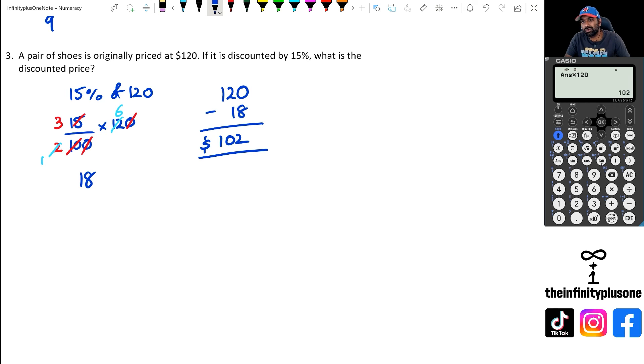So again, you can actually do this in the calculator. So you could have actually done 15% of 120 in the calculator. So you would just go 15 over 100 multiplied by 120, and that's going to give you 18. And then you would go 120 take away 18, which gives you the 102. Or you could have just done 120 times 0.85, which is going to give you 102.